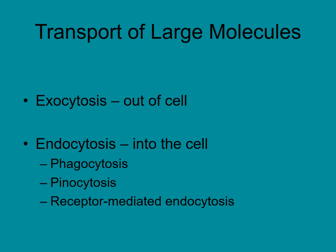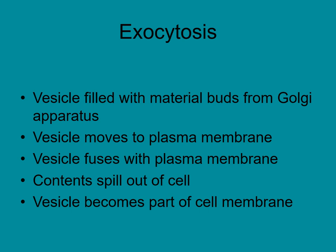But how do you move large things? Exocytosis — exo means out, cito means cell — so you're moving substances out of the cell. Endocytosis means moving into the cell. For exocytosis, usually a vesicle filled with material, often coming from the Golgi apparatus, moves toward the plasma membrane and actually fuses with it. When it fuses, it spills everything inside out of the cell, and that vesicle membrane then becomes part of the cell membrane.